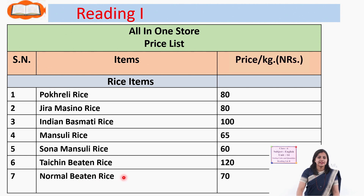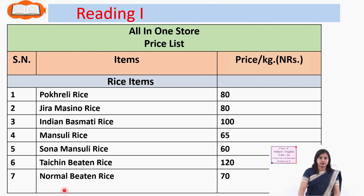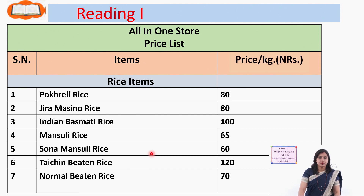The next item is Taichen beaten rice. Beaten rice is not exactly rice — it is a flattened rice. Taichen beaten rice costs 120 rupees per kg. That is the most expensive variety among all seven types. The next one is normal beaten rice, which costs 70 rupees per kg.